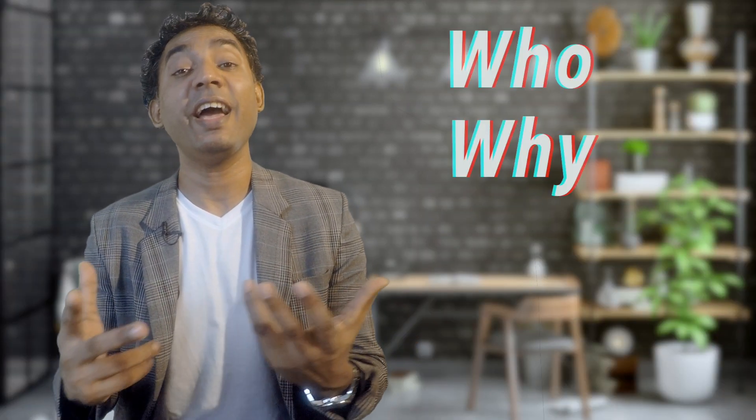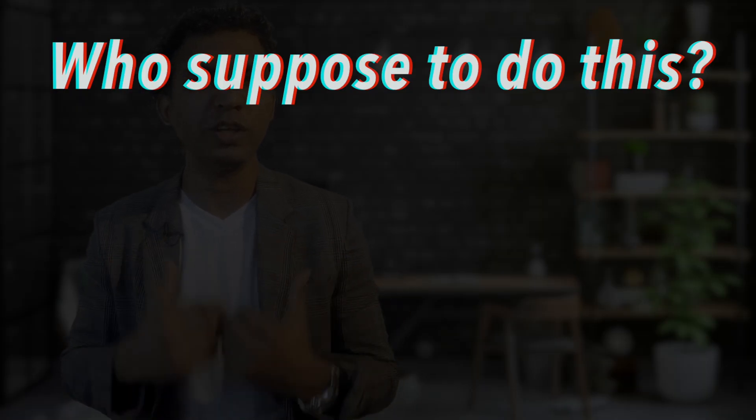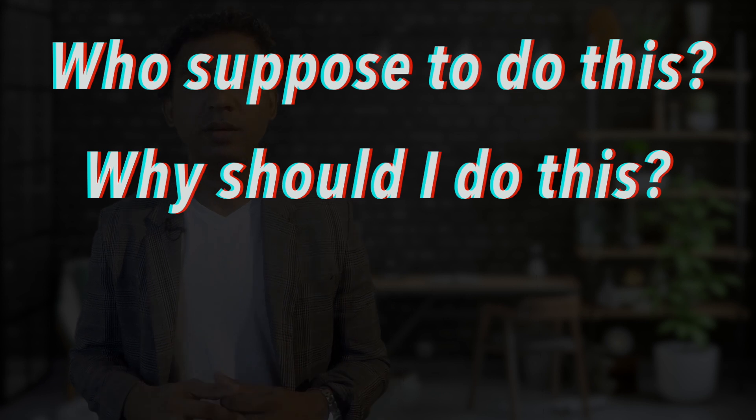Miller concluded that when we get into an unfavorable situation like that, we ask questions from ourselves, and these questions lead to victimized answers. These questions start with who, why, and when. When an unfavorable situation happens, we ask ourselves: Who's supposed to do this? Why should I do this? When will the management give me more tools? So when you ask these questions, automatically you point the finger at others. You become a victimized person. You become a victim.